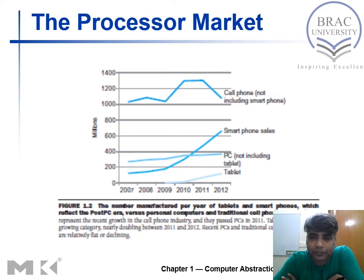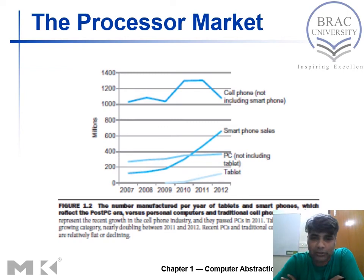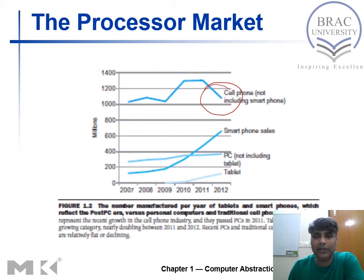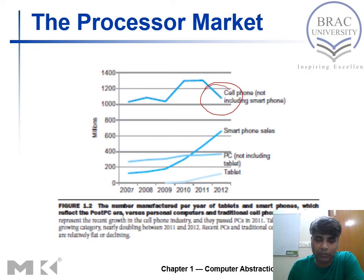Now let's look at the processor market — where the market stands based on the processors different devices use. The data here goes up to 2012–2013, but the scenario is almost the same. For cell phones, you can see from the graph that the feature phone processor market is declining — it's coming down — while most phones are now smartphones.